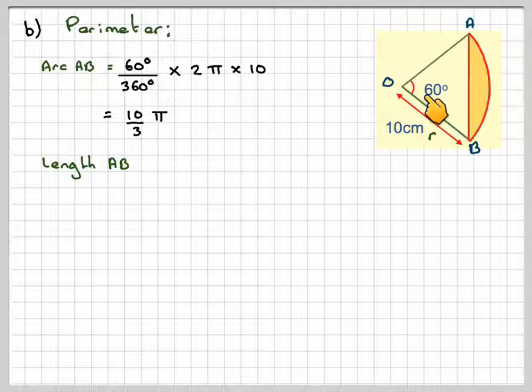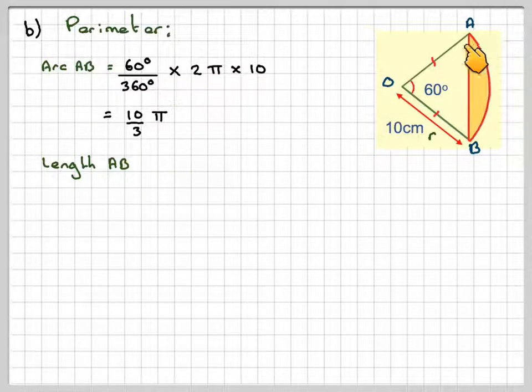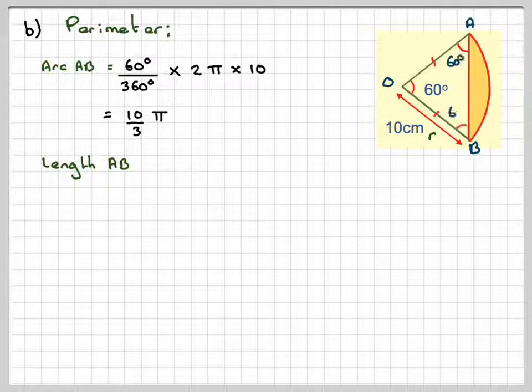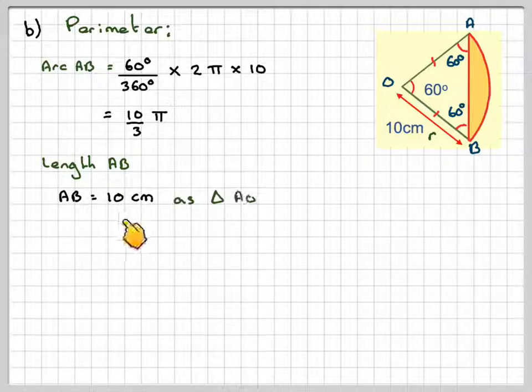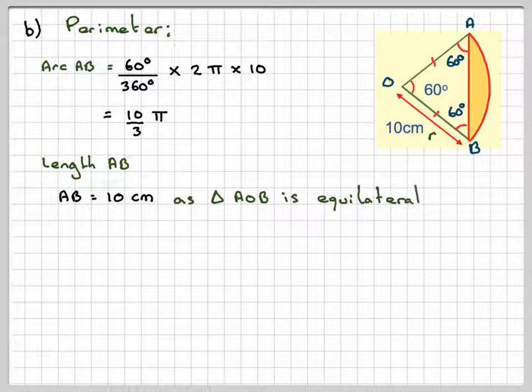Now, this angle here is 60, and we know that these two sides are the same. So this triangle is at least isosceles, and because this is 60, then this 2 must add up to 120, and then divide those by 2, so both these two angles here are 60. So what we've got is an equilateral triangle, so AB is also 10 centimetres.